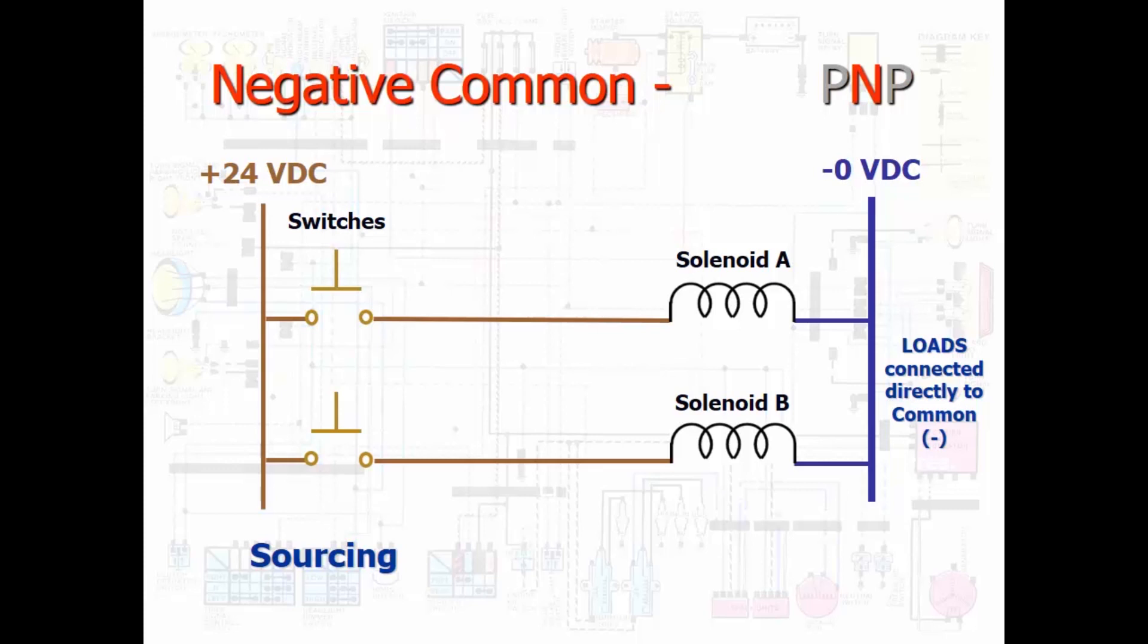If the solenoids are PNP, they would be attached to the negative common as shown here. The valve needs controller signals to close the switches for either solenoid A or B to be turned on.